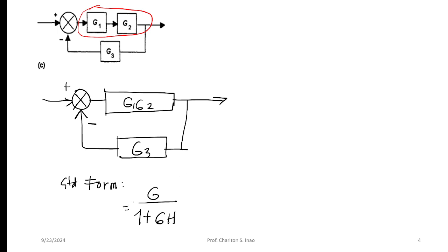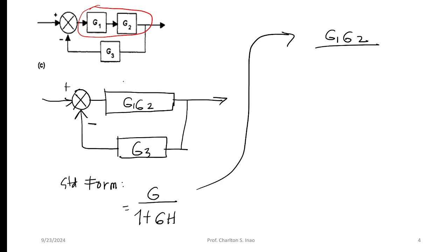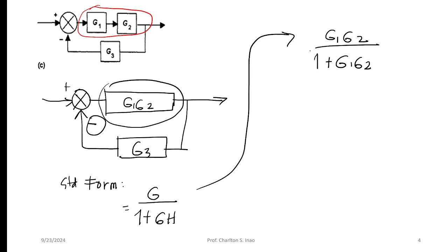The feed-forward G is the direct loop connecting input to output, which is G1×G2. Since the feedback is negative, the denominator becomes 1 plus G×H, where H is G3. So we have G1G2 in the numerator, and 1 plus G1G2×G3 in the denominator.